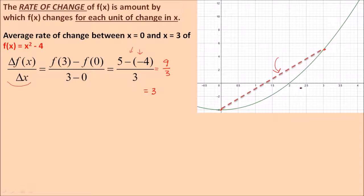Don't you think of slope when you see this? If we look at the graph of the function, that's y = x² - 4. Here's at x = 0, over here is at x = 3. So what we're finding is the rate at which it was changing between here and here. And sure enough, it was changing by 3 units per unit.